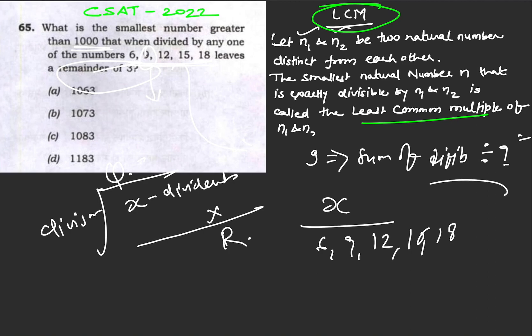That means if we remove the remainder of 3, then x-3 would be exactly divisible by these numbers. So if we check x-3, it should be divisible by 6, 9, 12, 15, 18.